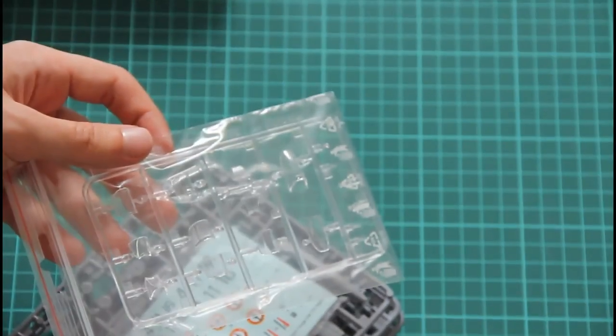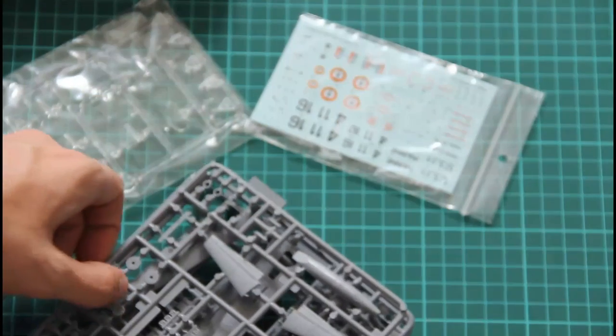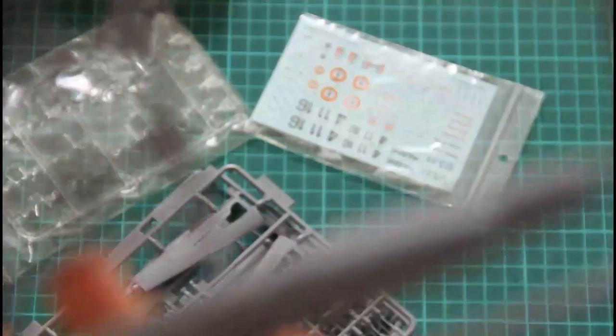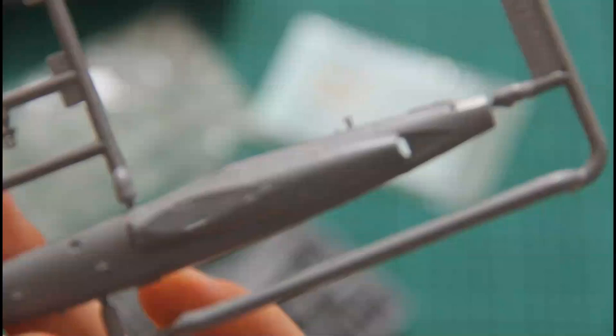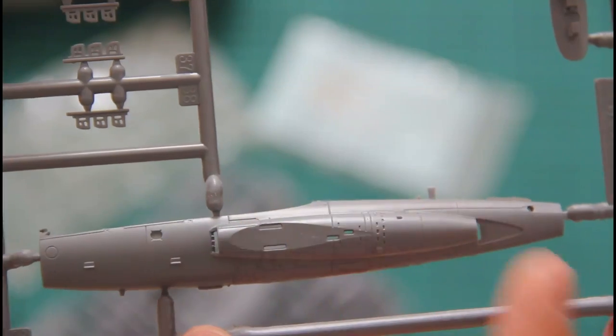So now let's move on to the sprues. As you can see, the transparent sprue is packed into separate bags. The same can be said about decals. But let's first start with these grey plastic sprues because they contain interesting parts for the model. First is the sprue which contains, I guess, the left fuselage half. As you can see, it's molded together with the engine gondola.